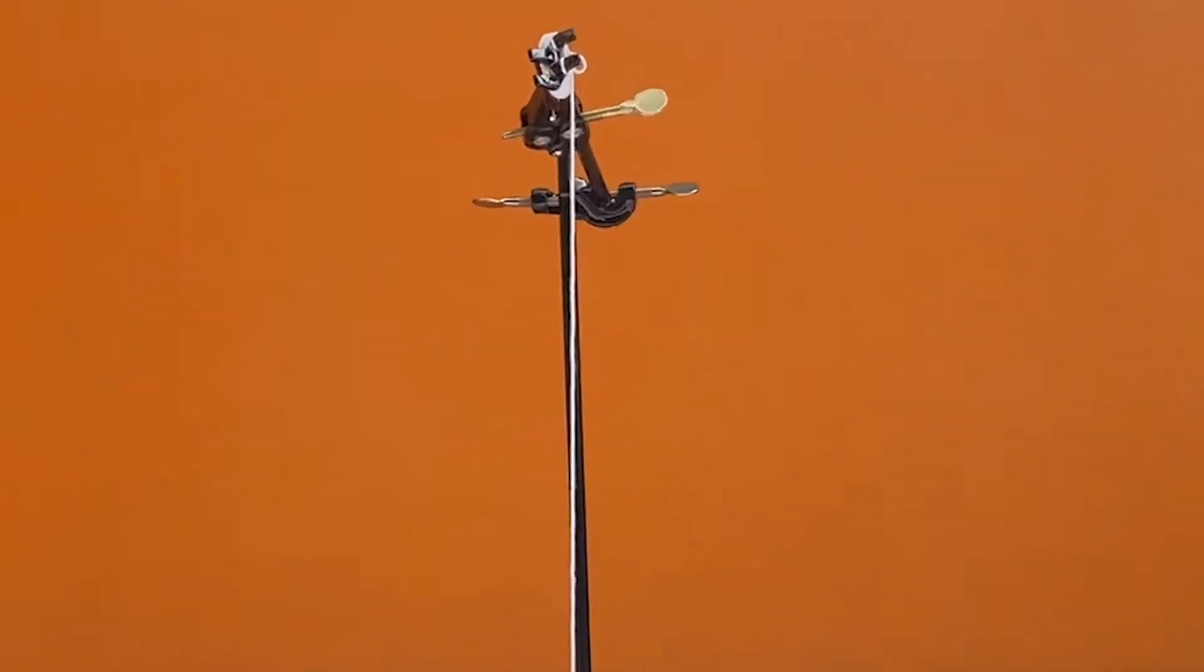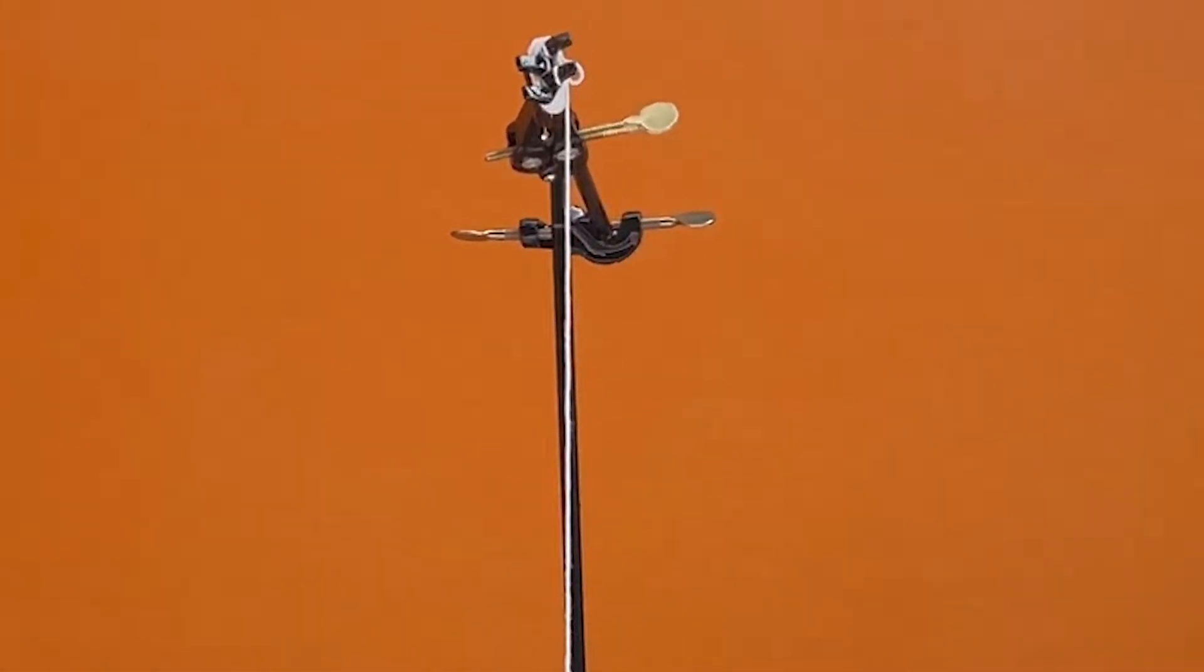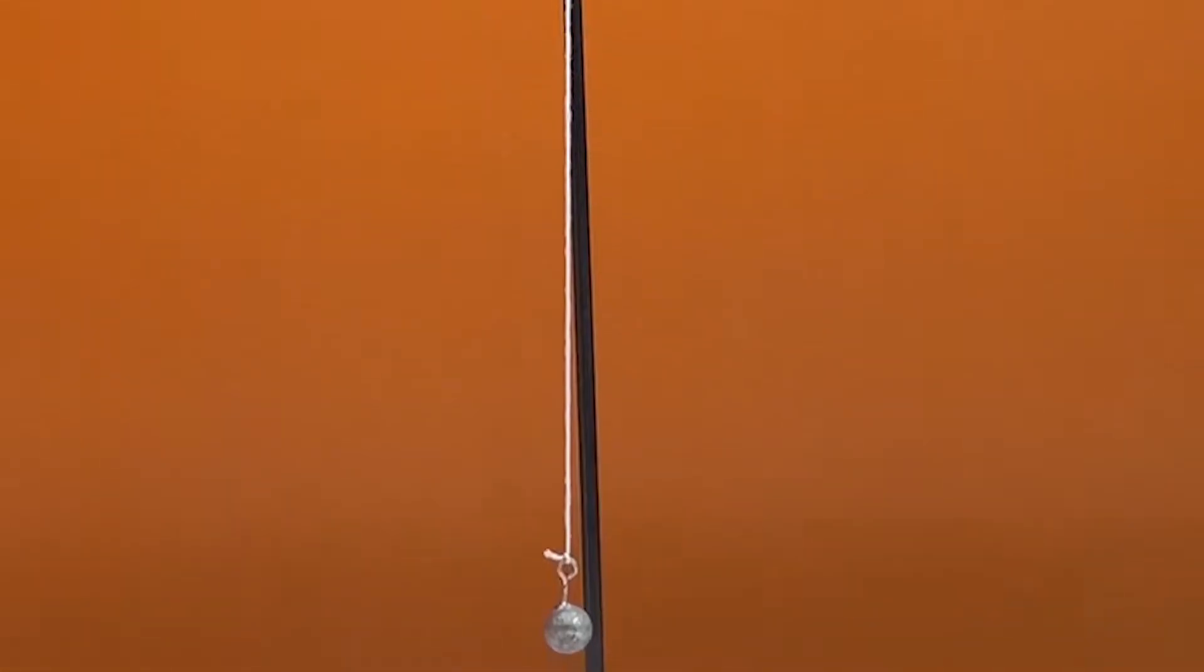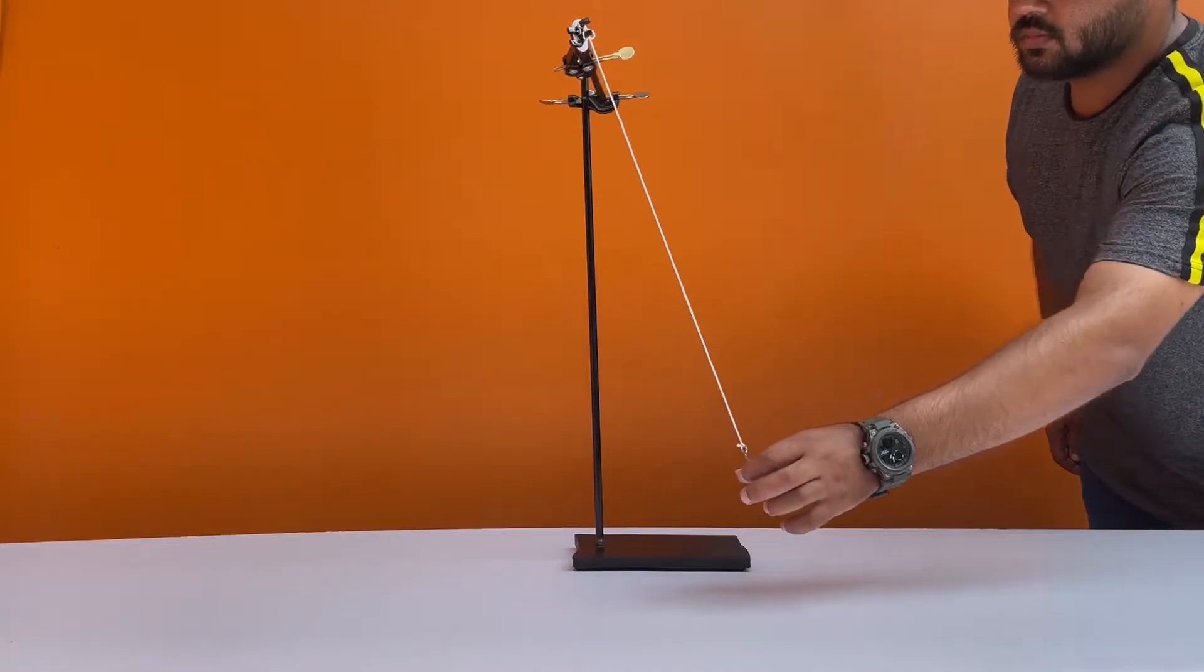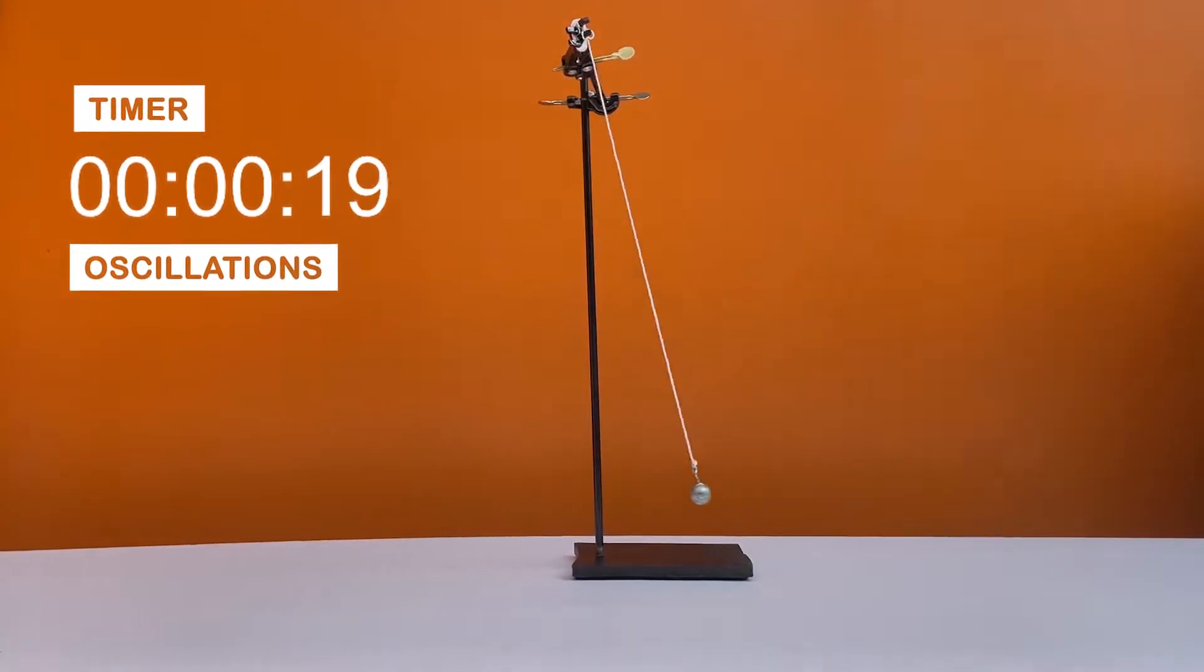Procedure: Fix the free end of the pendulum to a point on a monopod stand. Measure the distance from the clamp to the metal bob. Pull the pendulum bob to one side and measure the time for 10 oscillations.